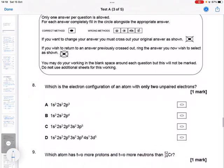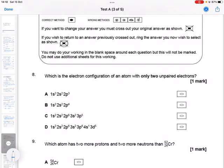Okay, which is the electron configuration of an atom with only two unpaired electrons? Okay, so let's have a look. We need to draw these out really.